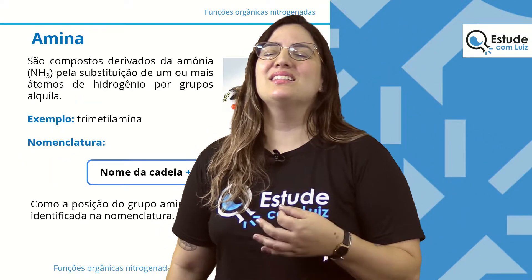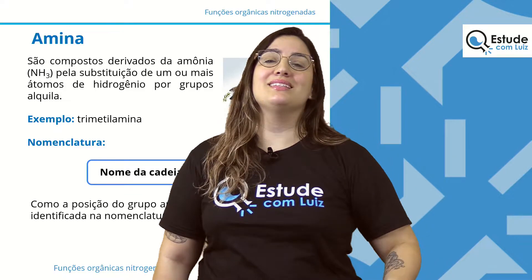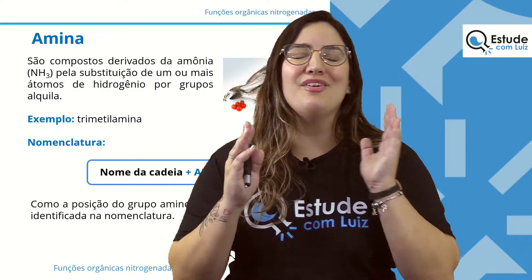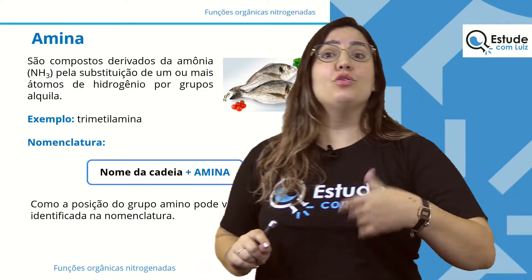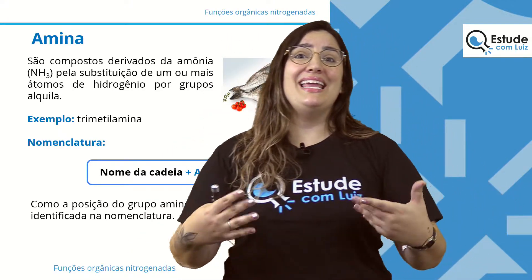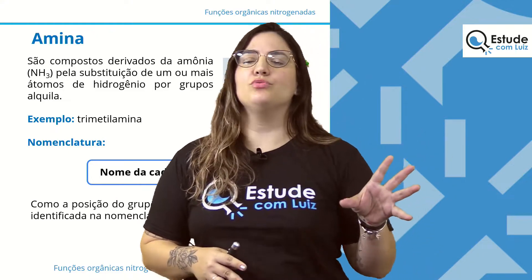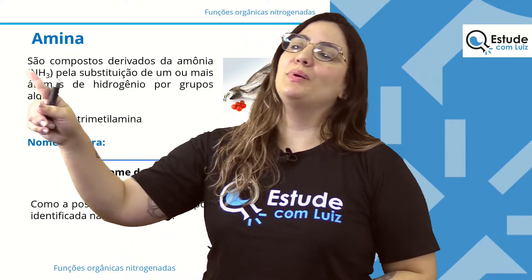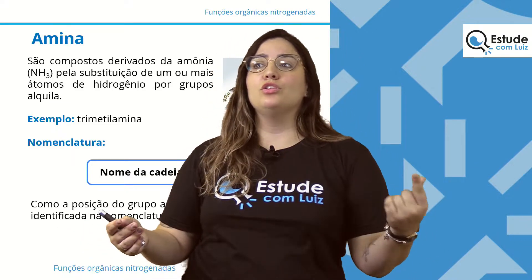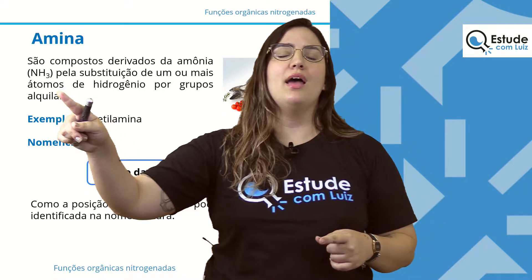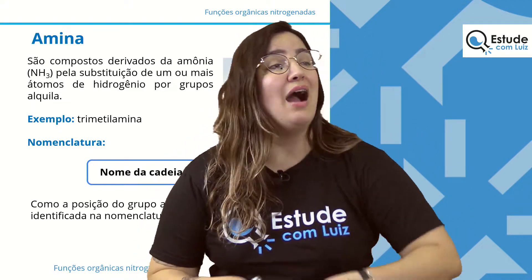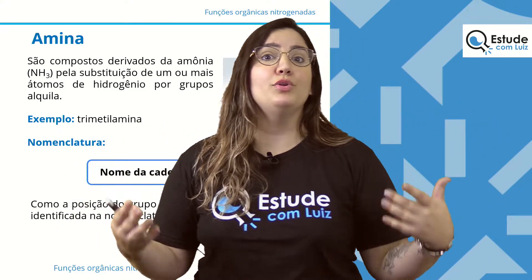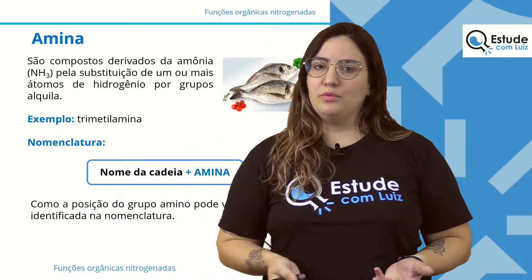Nós vamos ver duas funções que são super importantes. São funções muito comuns, até mesmo no nosso dia a dia. A gente começa sempre com as aminas, que são funções derivadas da amônia — NH₃. Pela substituição de um ou mais átomos de hidrogênio por grupos alquila. Alquila são grupamentos formados por hidrocarbonetos, o esqueletinho dos compostos que a gente estuda aqui na química orgânica.